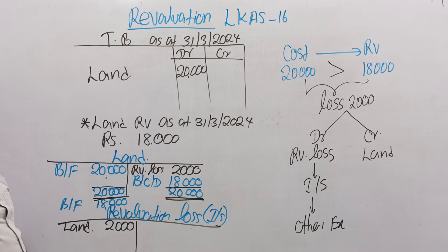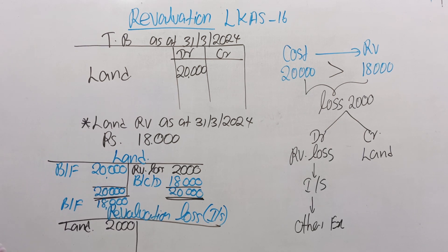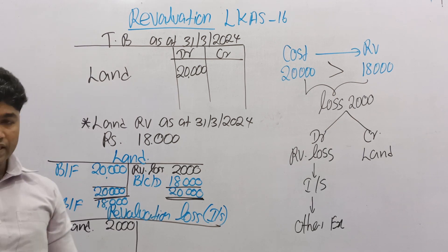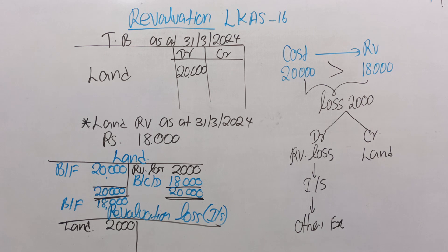Land is a non-depreciable asset. But if there is a profit from revaluation, it should be recorded in the revaluation reserves account. If there is a profit, land account is debited and revaluation reserves account is credited. Profit should be recorded under other comprehensive income.